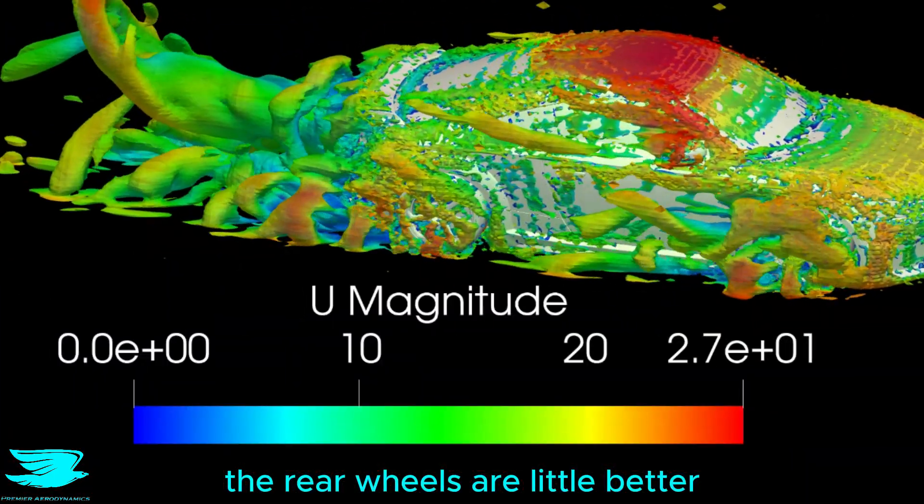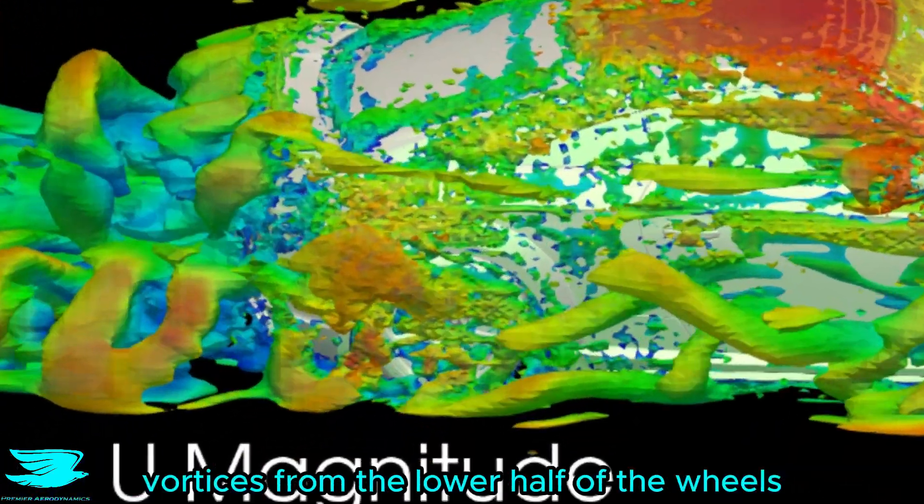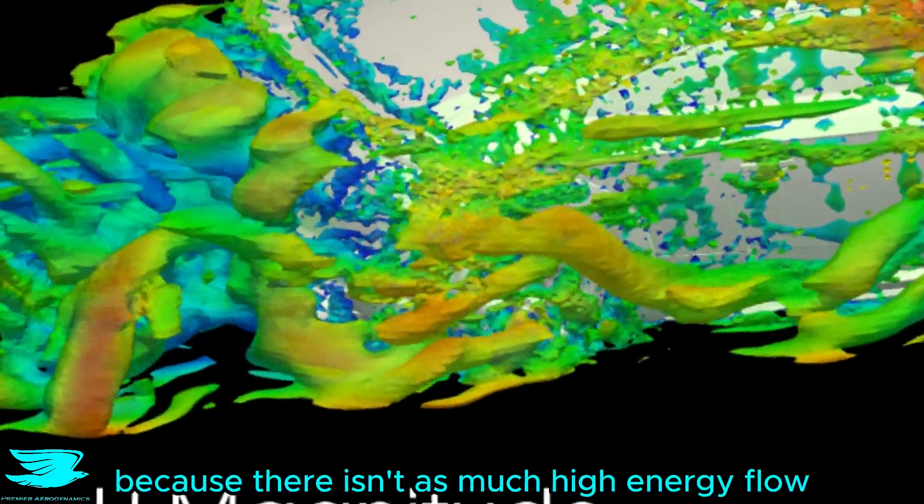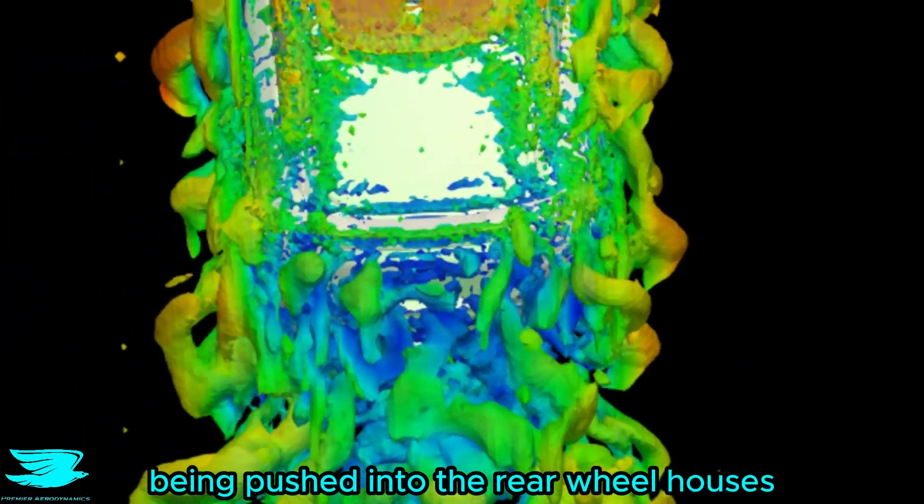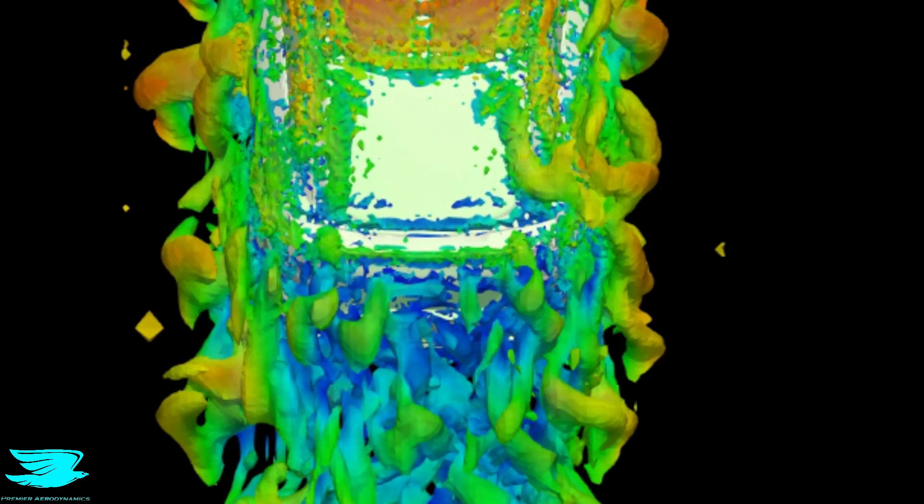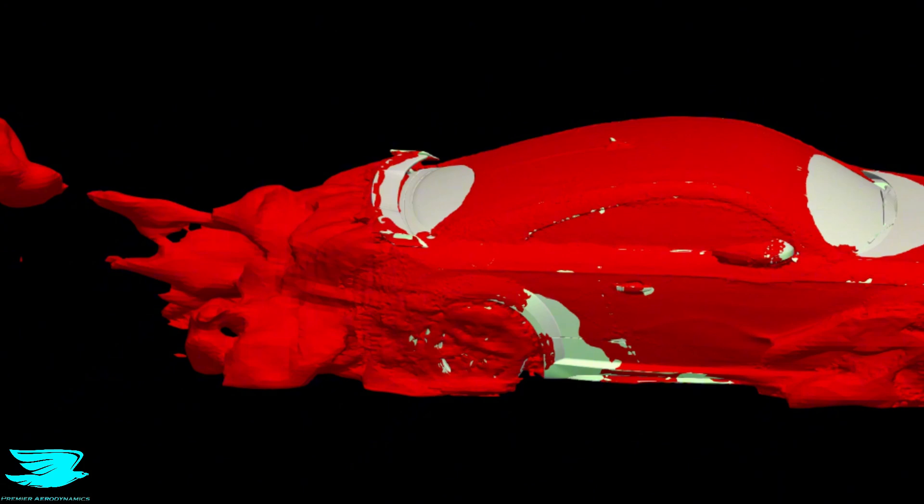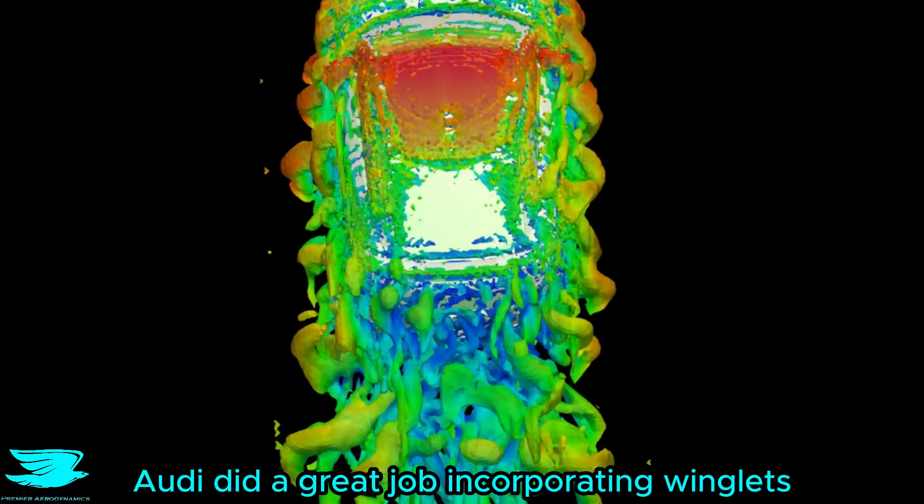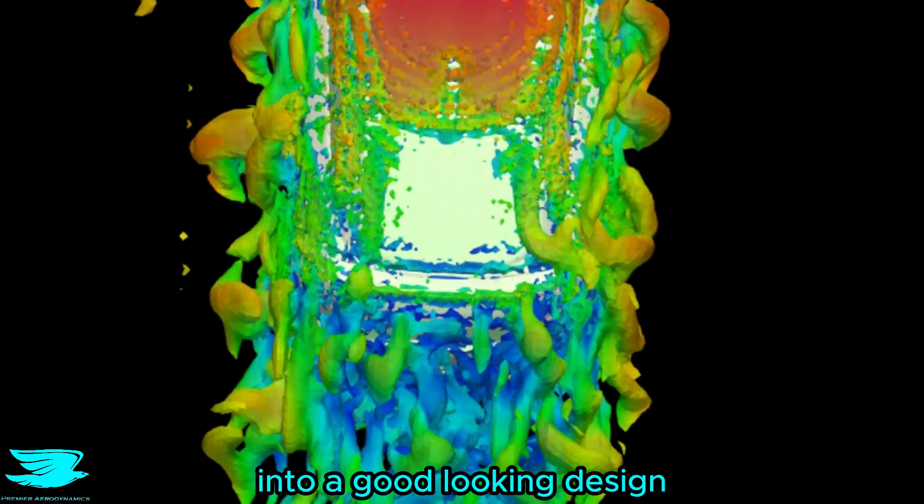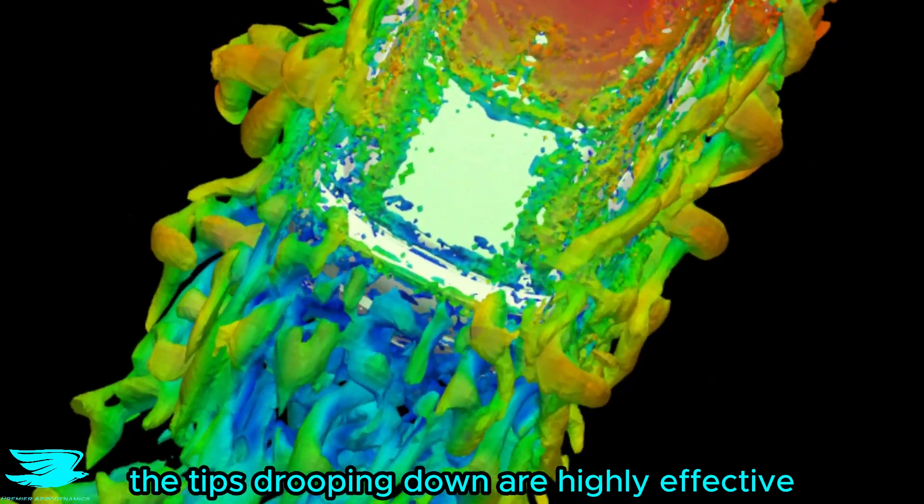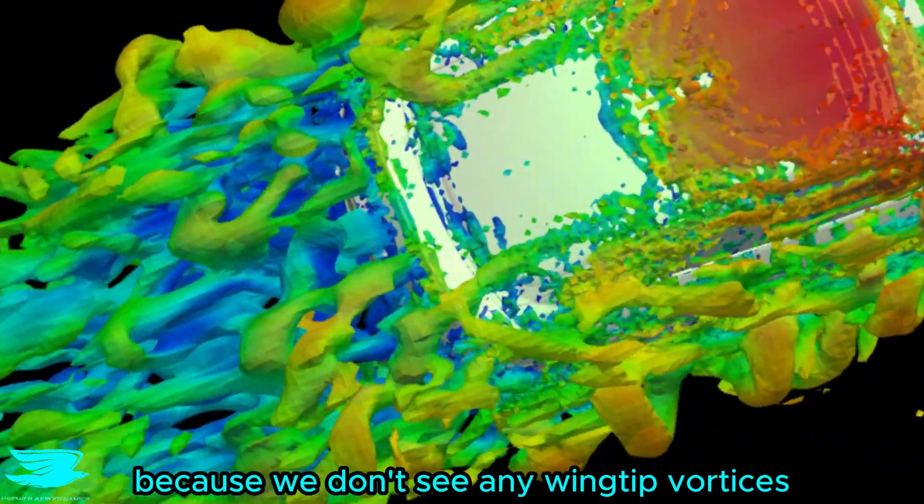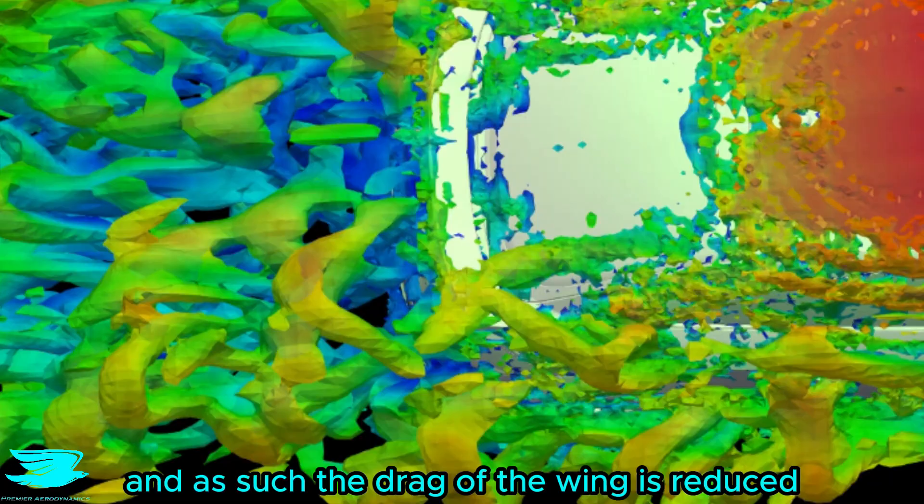The rear wheels are a little better because they only have vortices from the lower half of the wheels, which is likely because there isn't as much high energy flow being pushed into the rear wheelhouses, which then needs to escape later. As such, the drag from the rear wheels is mostly from the lower half. In terms of the rear wing, Audi did a great job incorporating winglets into a good looking design. The tips drooping down are highly effective because we don't see any wingtip vortices, and as such, the drag of the wing is reduced.